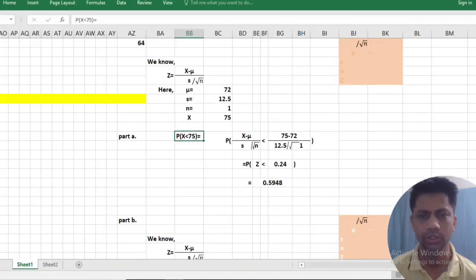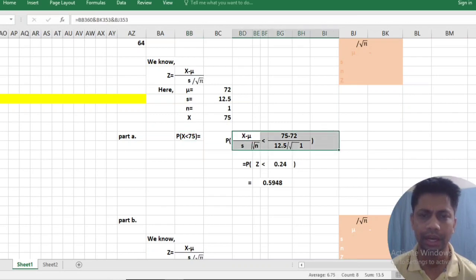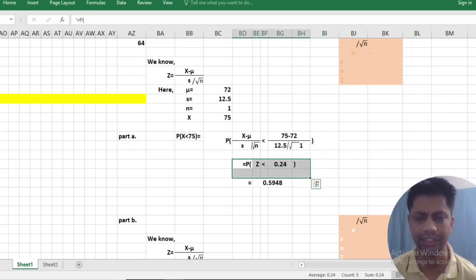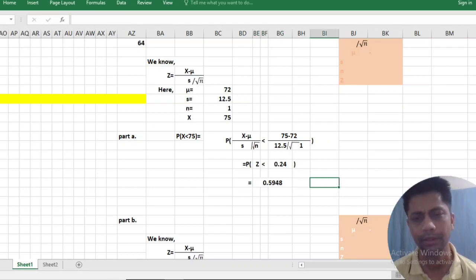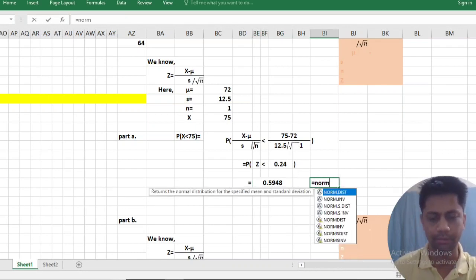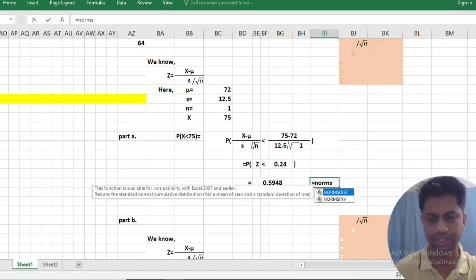So I got this and z is this. By using Excel, I have calculated this NORM.S.DIST.